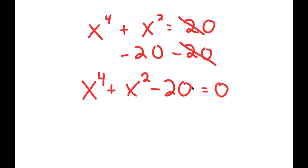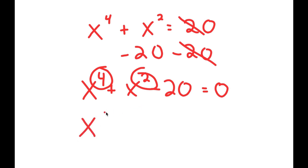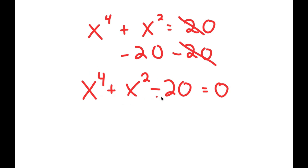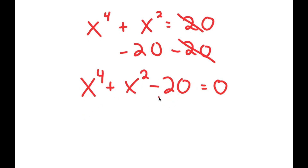Now this may seem like a quadratic equation, but it's not because we have the power of 4 as our primary term, and then that's followed by the power of 2. In a normal quadratic equation, we have 2 as our primary, then we just have 1, and then we have some constant c. So we can't factor this using the quadratic formula because this is not a quadratic equation.